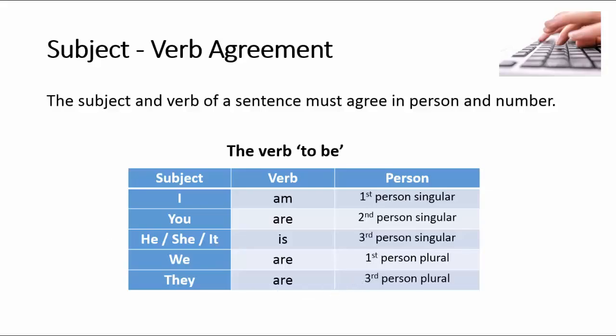Let's have a look at a business type of verb, which is 'require.' I require, you require, he, she, it requires. So the third person singular has changed its form — it's got that 's' at the end.